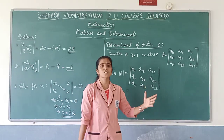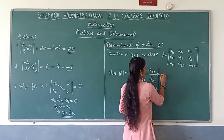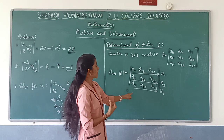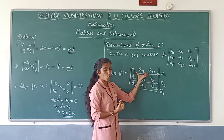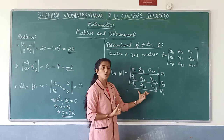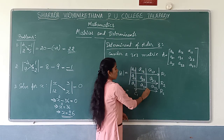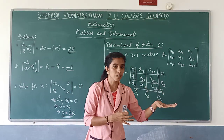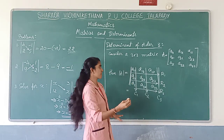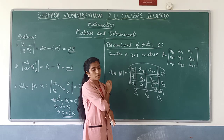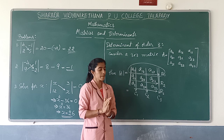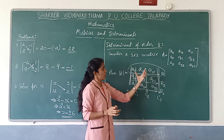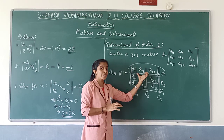To find the determinant of order 3, there is not just one method. You can expand along row 1, row 2, row 3, or column 1, column 2, or column 3 — six different ways in total. But most of the time we go along row 1 for practice, because if you are practiced with one method you don't get confused. If you are very confident then only should you go for any other.